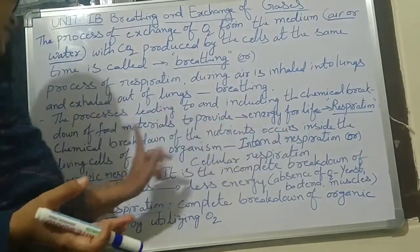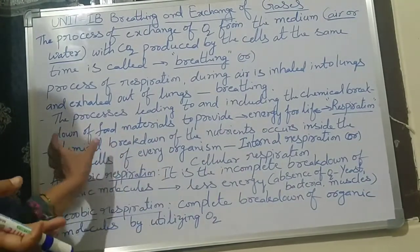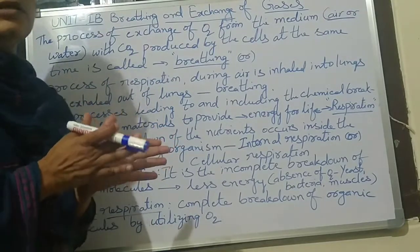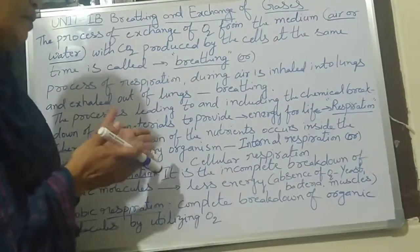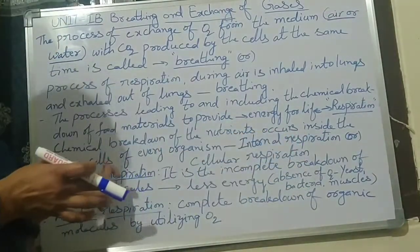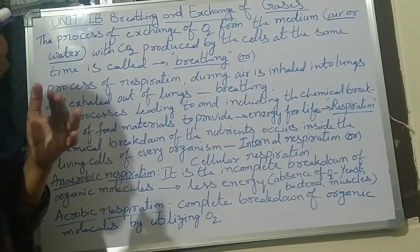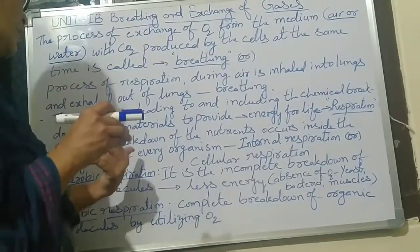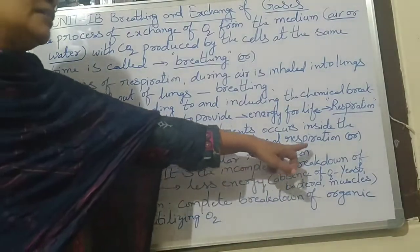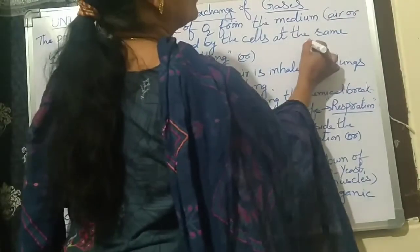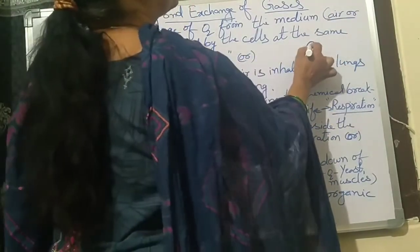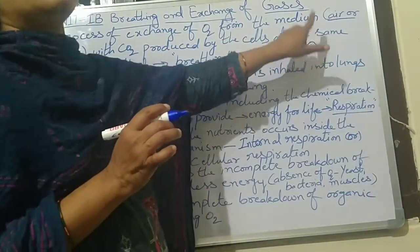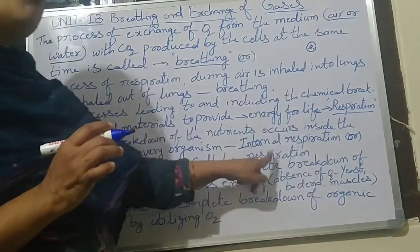Chemical breakdown of nutrients occurs inside the living cells of every organism. All animals take food, and the chemical breakdown occurs inside the cells — not in the alimentary canal or digestive glands, but in the living cells. This is called internal respiration, or cellular respiration. Organisms are made up of cells, and in those cells the chemical breakdown of nutrients takes place.